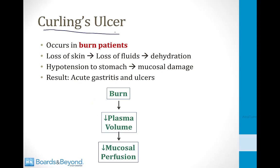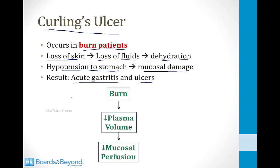A Curling's ulcer is an acute injury to the stomach lining that occurs in burn patients. Patients with extensive skin burns have loss of fluids and dehydration, leading to hypotension and reduced mucosal perfusion. Since you need normal blood flow to maintain the mucosal lining, the result is acute gastritis and ulcers — called Curling's ulcers. Patients with extensive burns are usually placed on a proton pump inhibitor to reduce this risk.